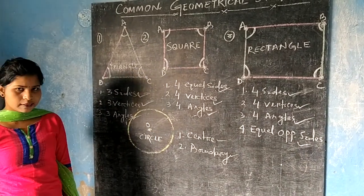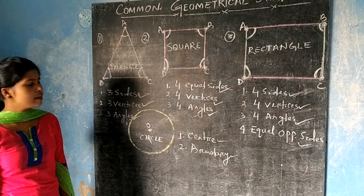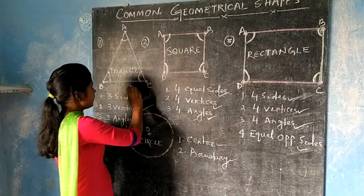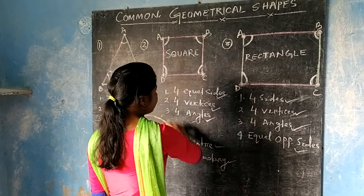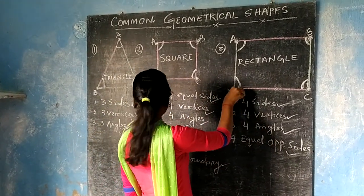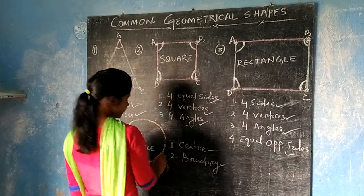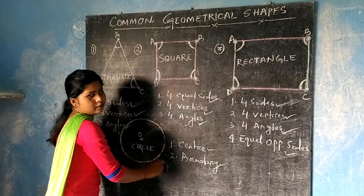Well, we learned about geometrical shapes. These are triangle, square, rectangle and circle. Thank you.